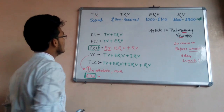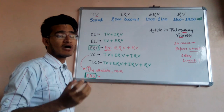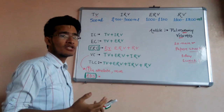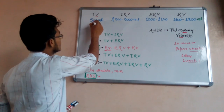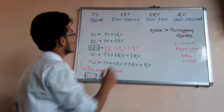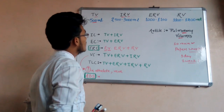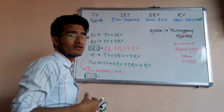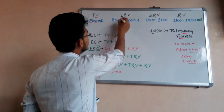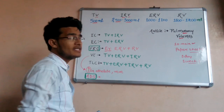The first is TV — tidal volume — which is the amount of air inspired or expired during normal breathing. This is 500 ml, very easy to understand and learn. After that, IRV — inspiratory reserve volume — this is the forcible inspiration, the volume of air that you inspire forcefully, which is 2.5 to 3 liters.